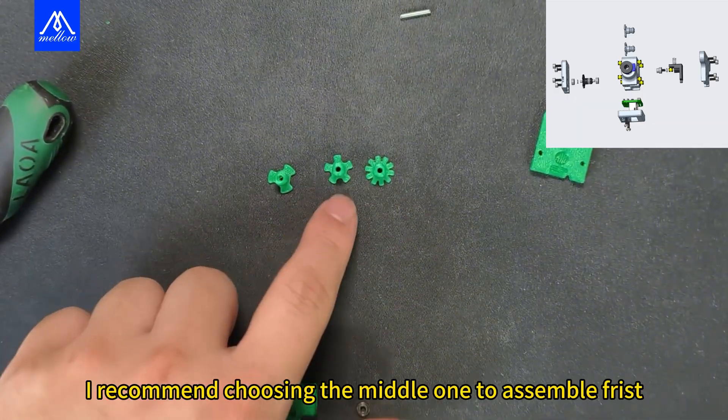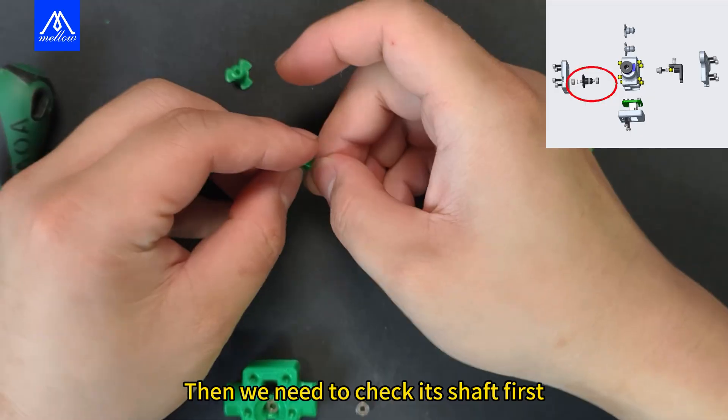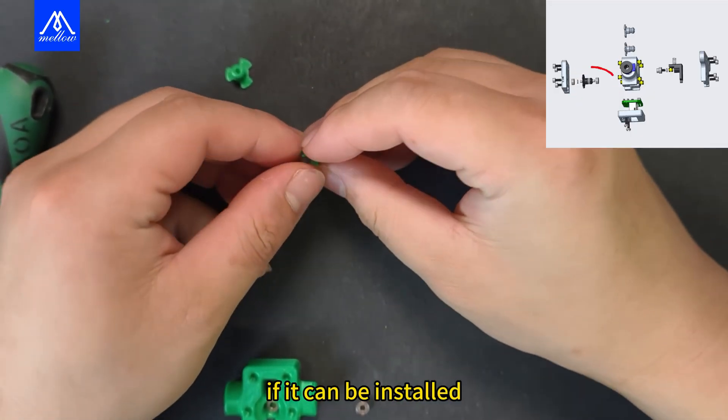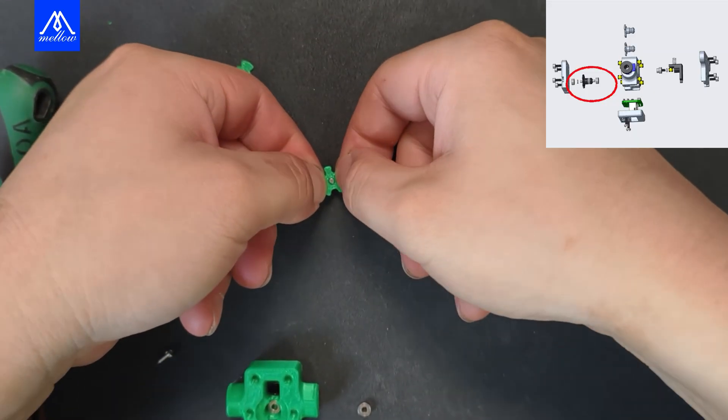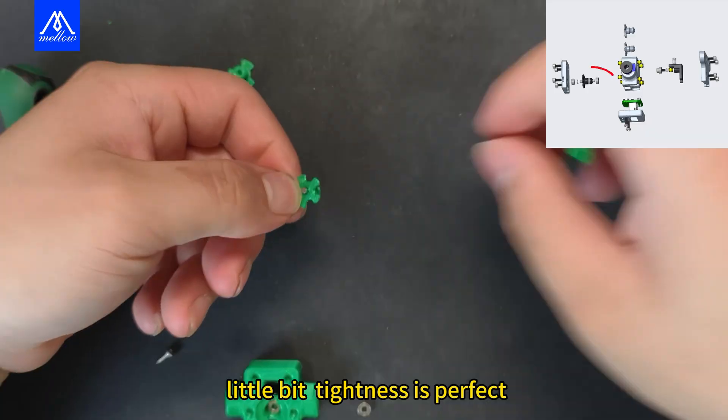There are three more gears. I recommend choosing the middle one to assemble first. Then we need to check its shaft first. If it can be installed, a little bit of tightness is perfect.